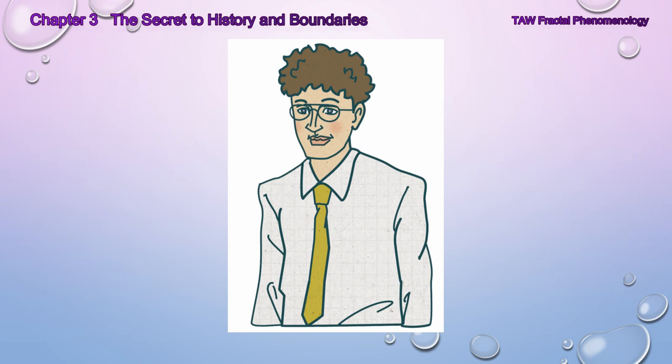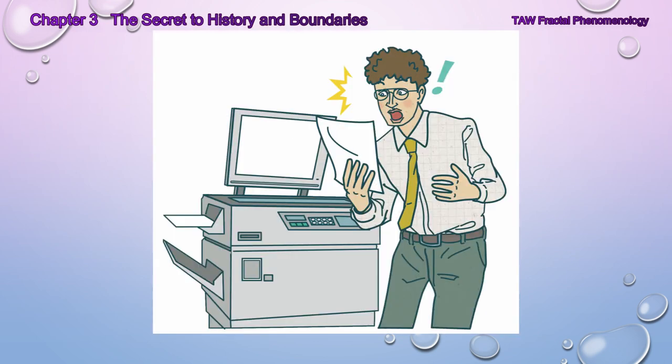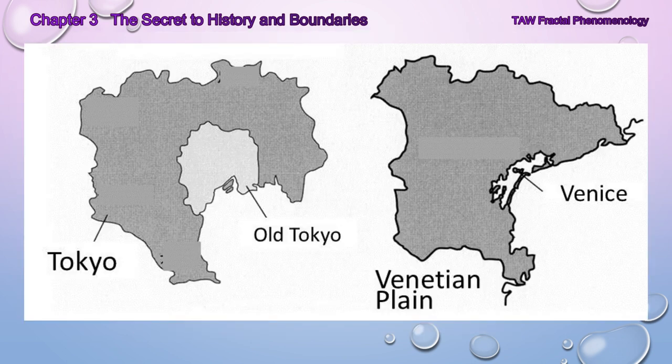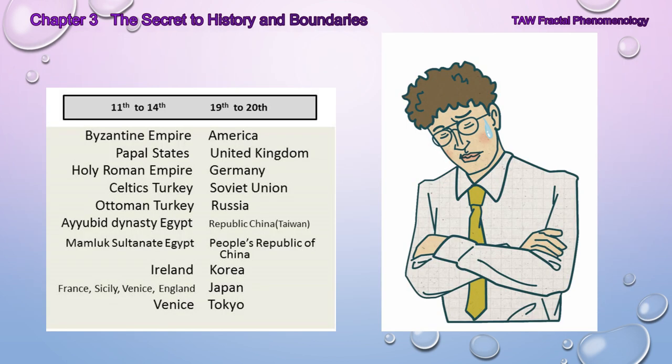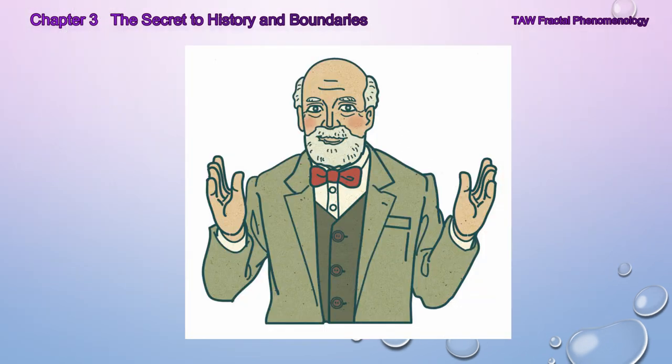At the time, MJ was working for a particular company and made this discovery while making a copy of a map. The shape of Italy's Venetian plain and Japan's Tokyo province had very similar outlines or boundary shapes. MJ had studied the similarity of mid-19th to mid-20th century Tokyo with 12th to 13th century Venetian plain and knew that the history was similar — however, the proof was in the map. It was the shapes of the land.